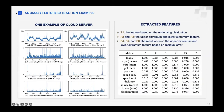Here is an example of the extracted features. F1 is a feature based on the underlying distribution. F2 and F3 are the upper and lower extreme value features. F4, F5, and F6 are the residual error and the upper and lower extreme features based on the residual error.